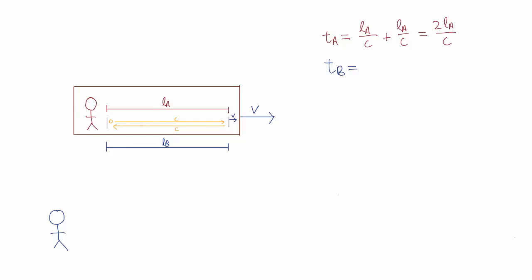Therefore, the time it will take the photon to reach the right mirror is LB divided by C minus V.